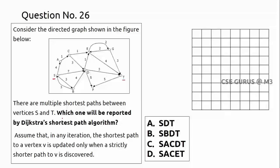Dijkstra's algorithm gives the shortest path from a source to all remaining vertices. For S to D, the direct path is 7. Another path S to B to D is 3 plus 4, which is also 7. Both are the same, so sometimes you may get multiple shortest paths.